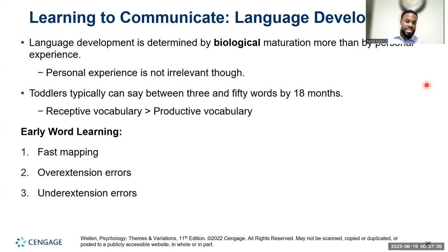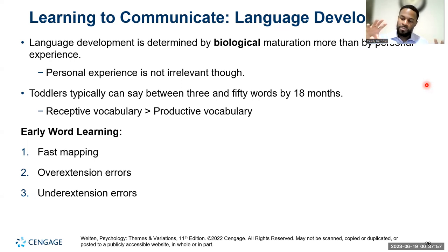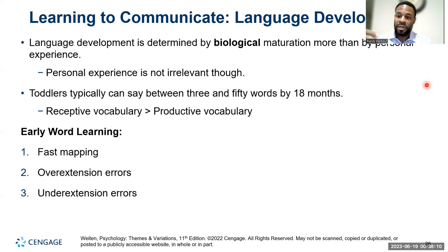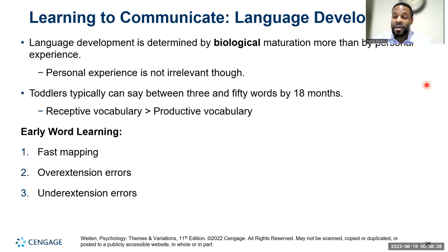Toddlers can say between three and 50 words by 18 months. Our receptive vocabulary consists of words we know but might not be able to readily produce — we know a lot of words but can't readily say them. Our productive vocabulary consists of words we can actually say and remember to use. We all have a larger receptive vocabulary than we have a productive vocabulary. We can read an entire book and know every word and definition versus being able to spontaneously produce a list of words — that's the receptive versus productive distinction.